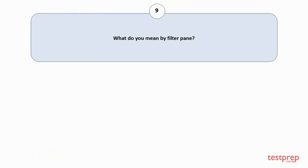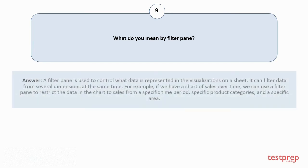Question number 9: What do you mean by filter pane? A filter pane is used to control what data is represented in the visualizations on a sheet. It can filter data from several dimensions at the same time. For example, if we have a chart of sales over time, we can use a filter pane to restrict the data in the chart to sales from a specific time period, specific product categories, and a specific area.